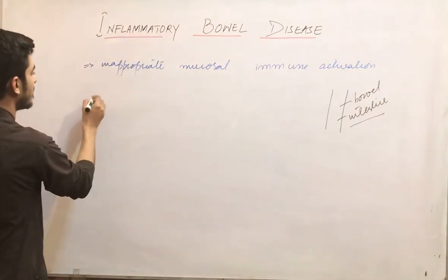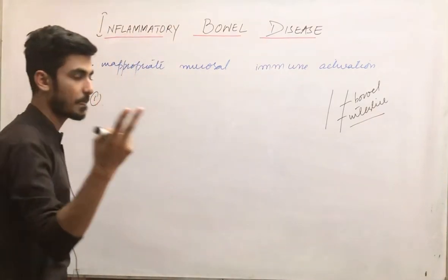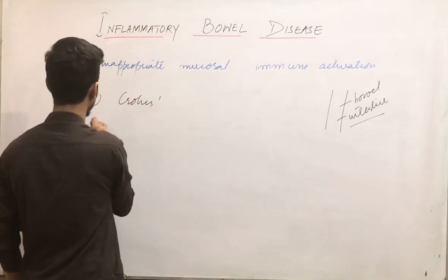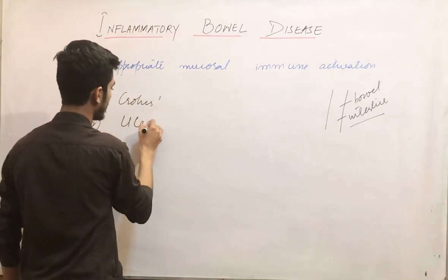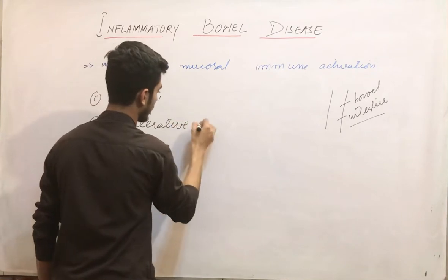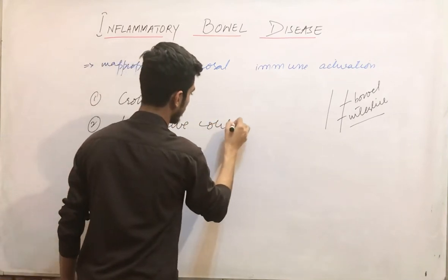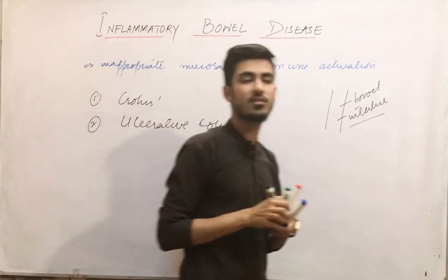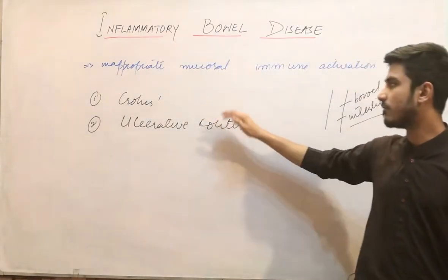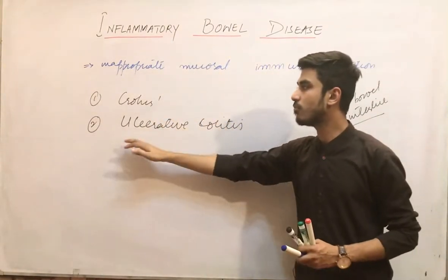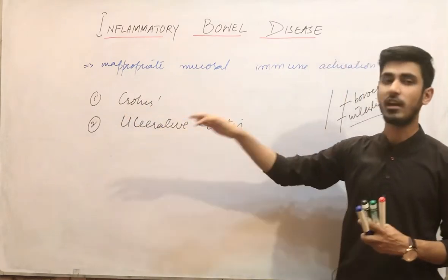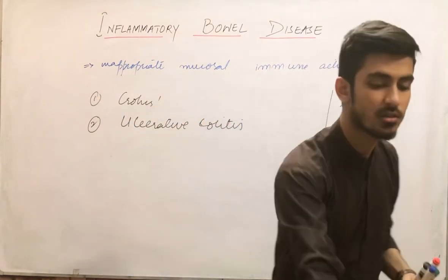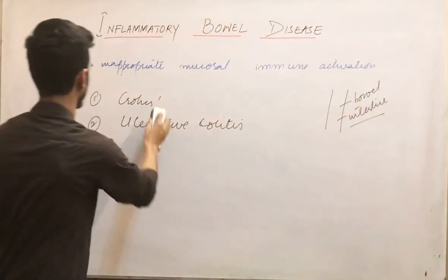This disease is characterized by two disorders. One is Crohn's disease and the other one is ulcerative colitis. We will be discussing these two disorders one by one in detail. But before moving to them separately, I will be discussing the pathogenesis of this disease — what is the pathogenesis of inflammatory bowel disease.